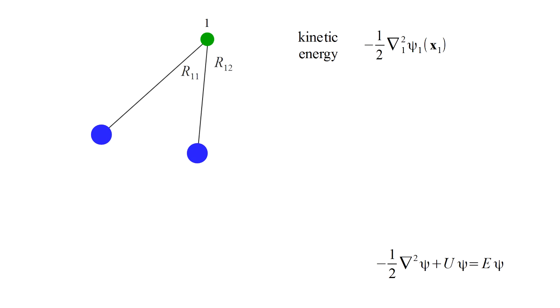The attractive forces of the two nuclei each result in a negative potential energy term. In an exact treatment, the repulsion between the two electrons would be represented by a positive potential energy term that depends on the positions of both electrons.